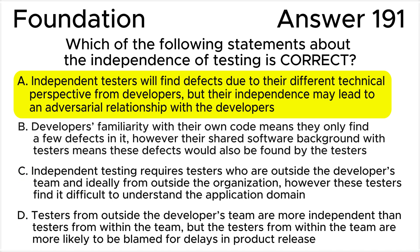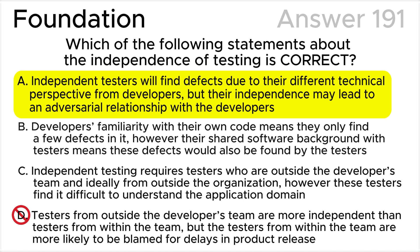Answer D is incorrect. Testing can be conducted at different levels of independence, ranging from no independence for the author to very high independence for testers from outside the organization, with testers from outside the developer's team generally more independent than testers from within the team. However, there is more reason to believe that testers from outside the team are more likely to be isolated from the developers and so are more likely to be blamed for delays in product release.